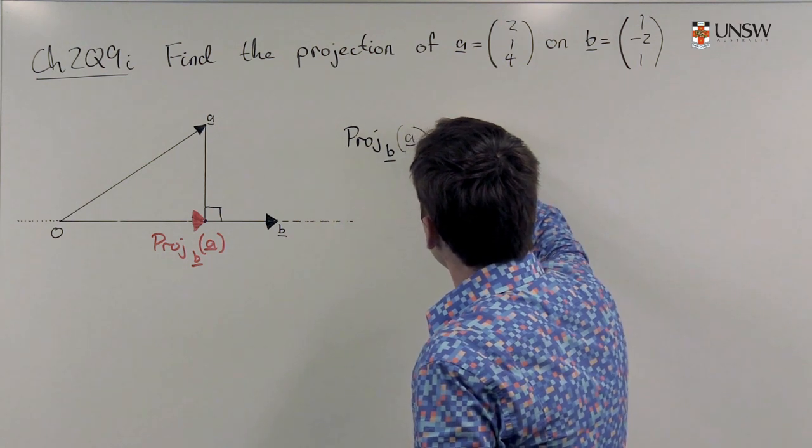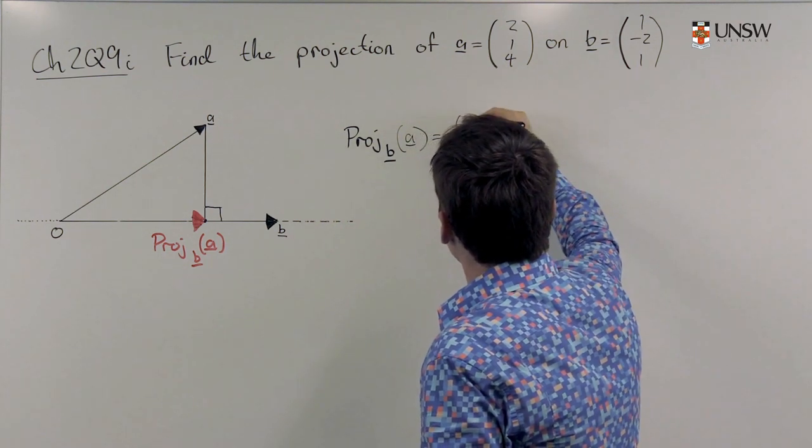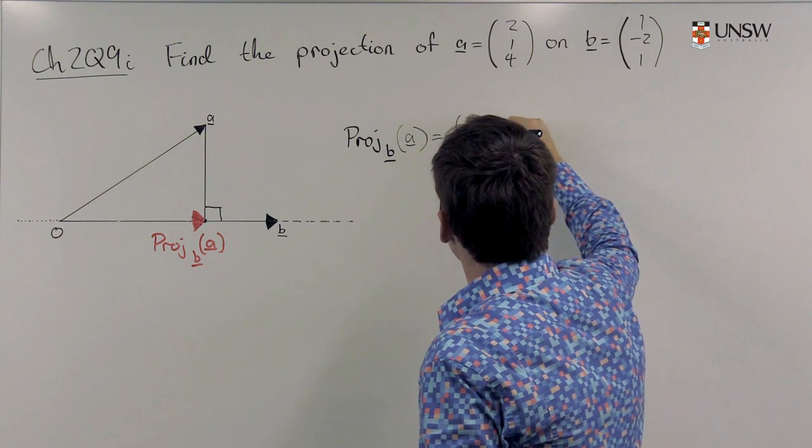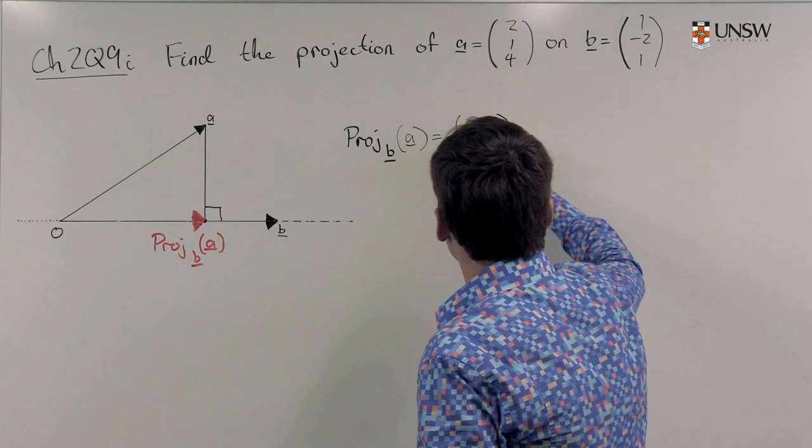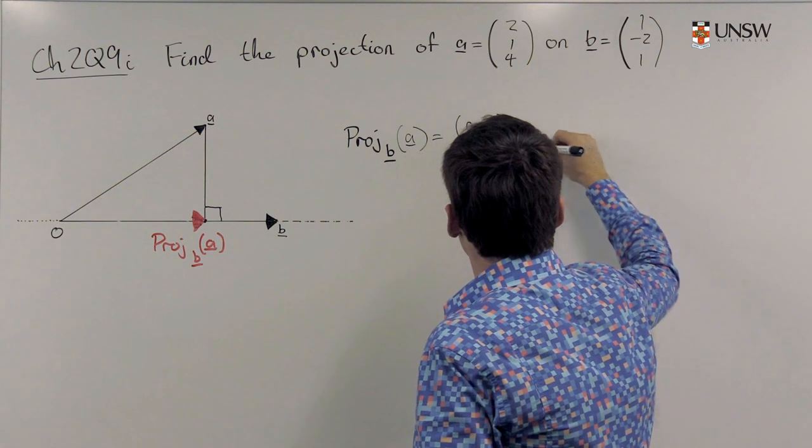is equal to a dot b over ||b||² times b.